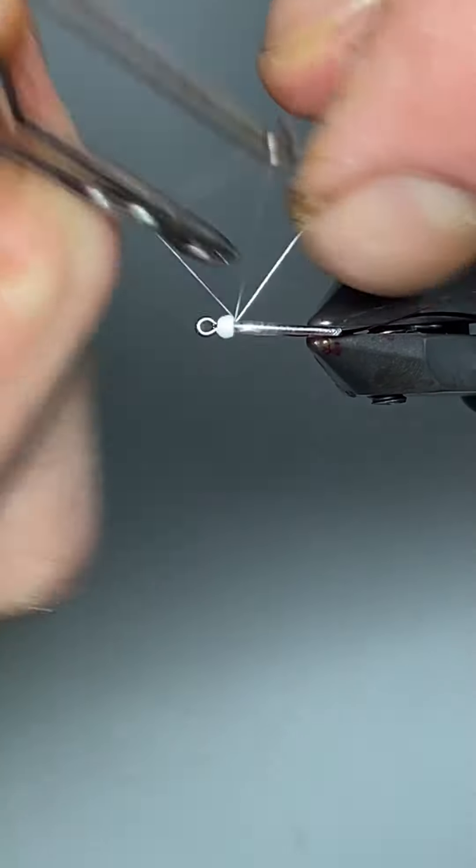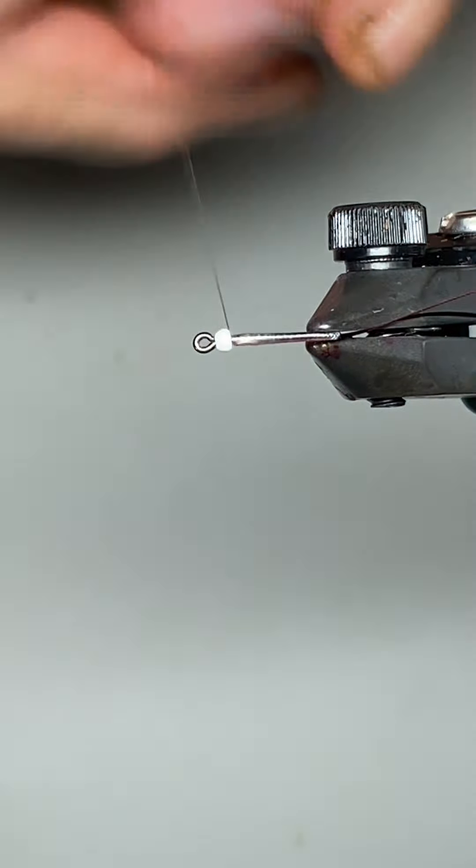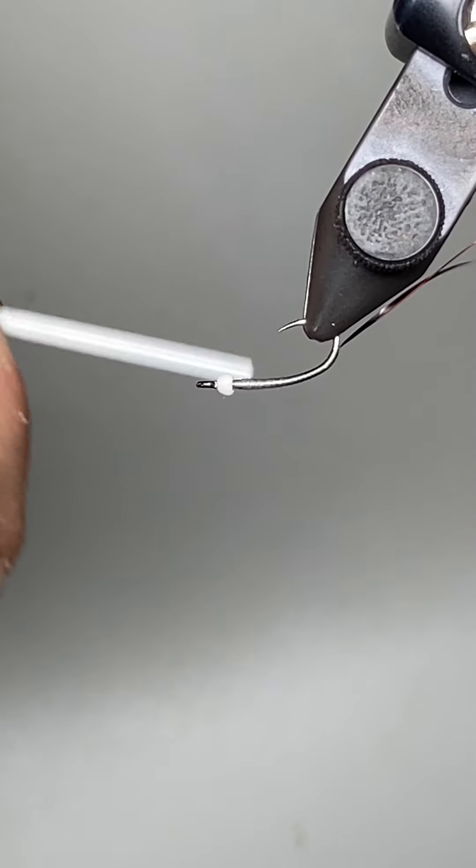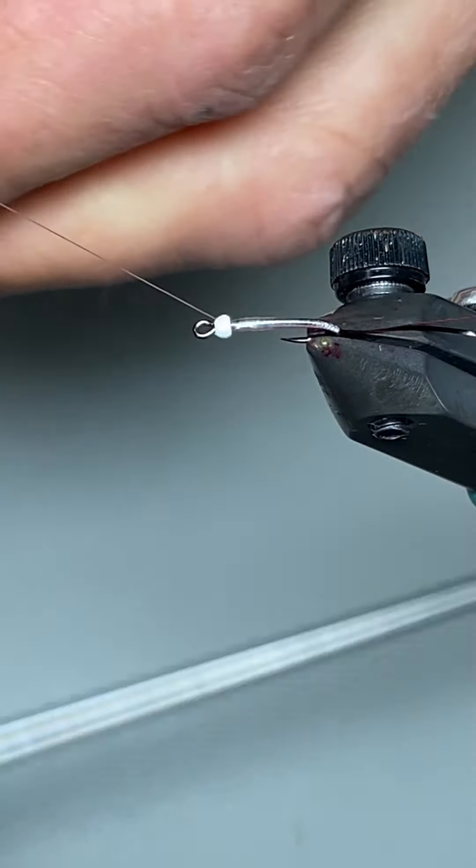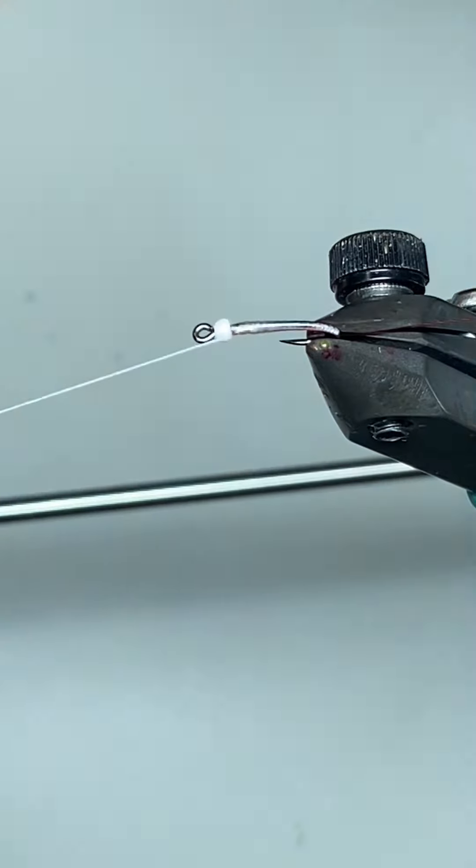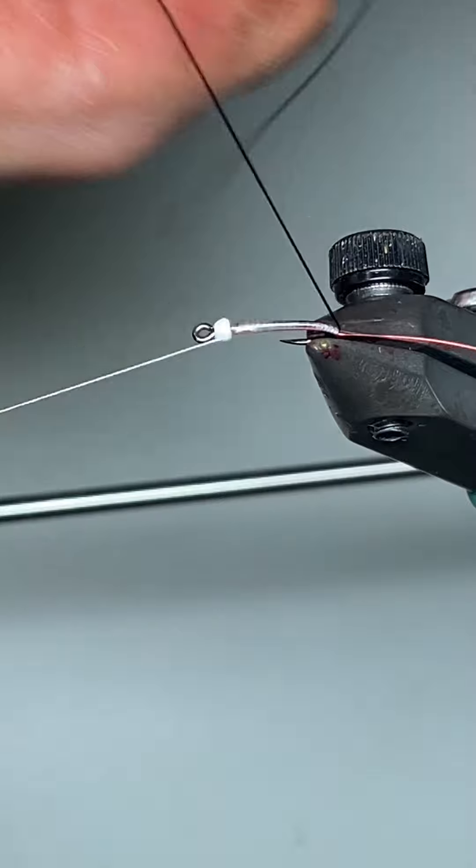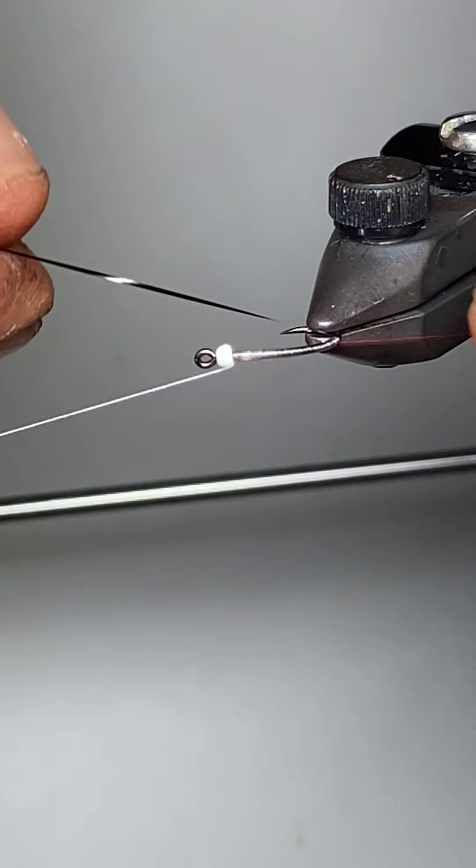So we'll do a two-turn whip finish. You can pull down on this quite hard. It's not going to break. So we make sure that whip finish is nice and secure. And then I'm going to take the black Flashabou and we'll wrap that up.